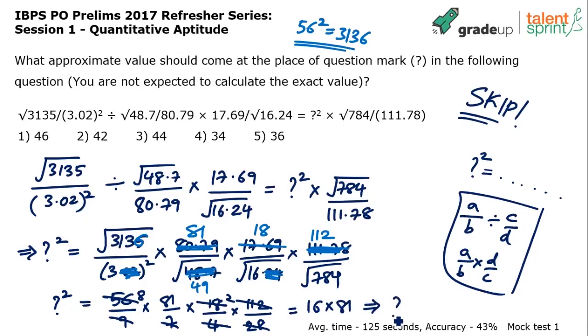Apply square root on both the sides. Question mark will be square root of 16 into 81. Square root of 16 is 4. And square root of 81 is 9. 4, 9 is 36. I think 36 is the closest here. 36 option 5.